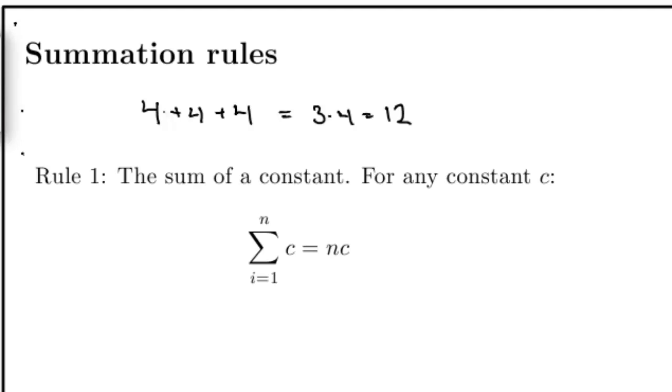Extending this idea to sums, if I sum a constant, that is, I sum the same number over and over, in particularly, I sum the number c n times, then I will get the result nc.